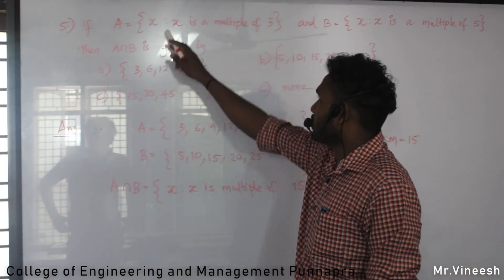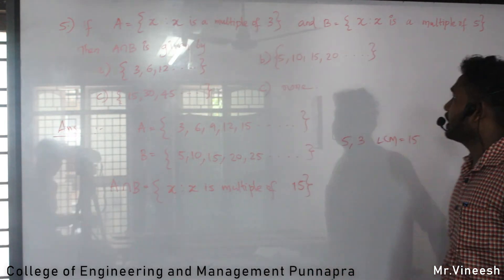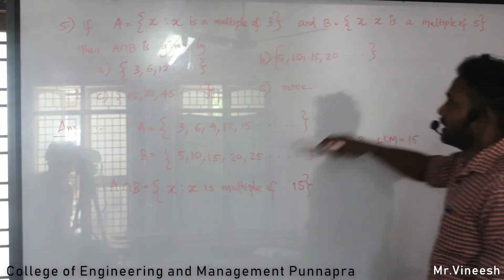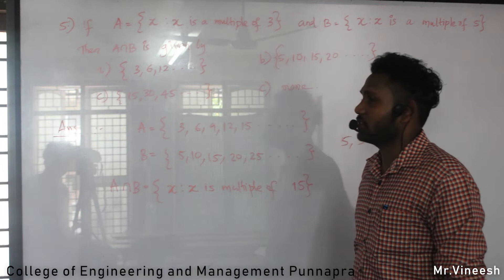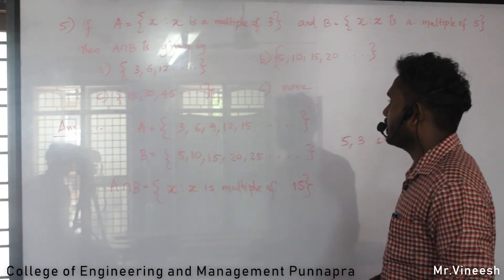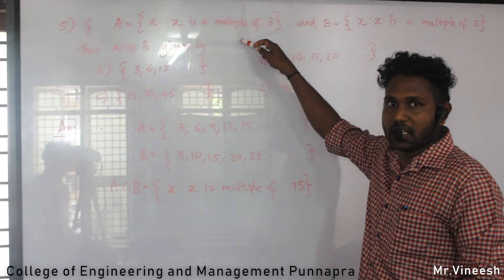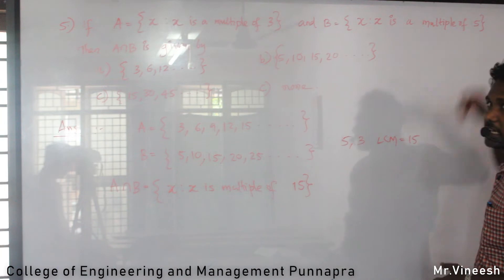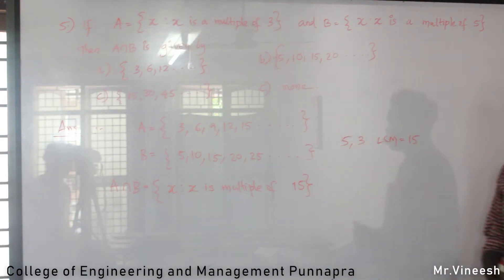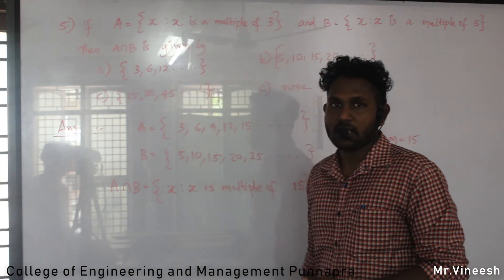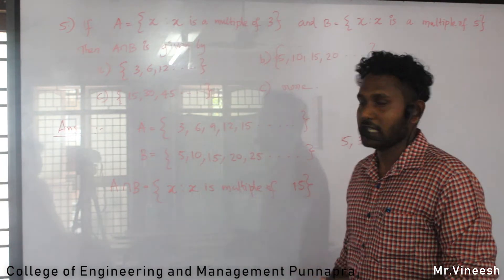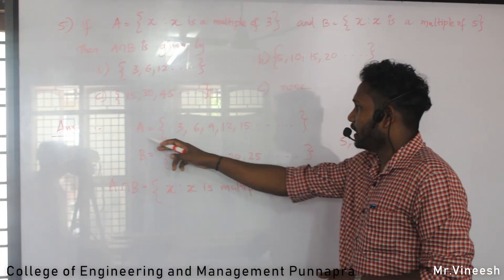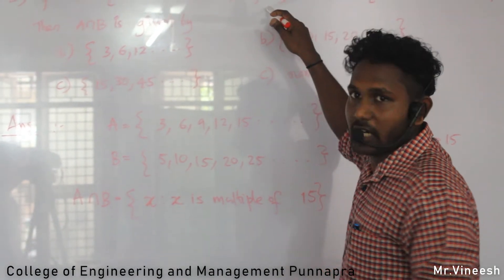If A is the set of forward X such that X is a multiple of 3, and B is the set such that X is a multiple of 5, then A∩B is given by multiples of both 3 and 5. So the elements of A are multiples of 3, and elements of B are multiples of 5.